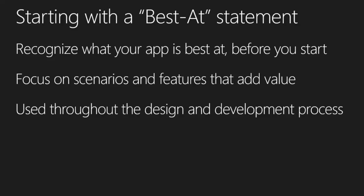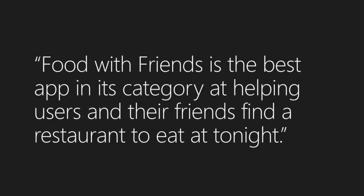When you're doing this best at statement, recognize what your app is best at. This will help you to recognize before you start what direction your application is heading in. This will also allow you to focus on scenarios and features that add value to your application. The best at statement should guide you through the design and development process. Here's an example: Food with Friends, as an application, is the best app in its category at helping users and their friends find a restaurant to eat tonight. Immediately, you're able to see that this application is going to try to achieve a specific goal — finding a restaurant to eat at tonight.